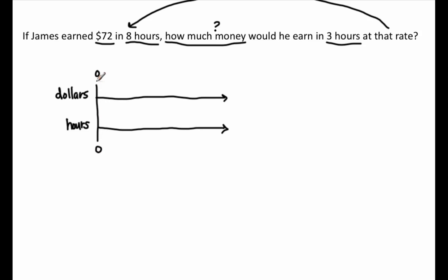This is the comparison that is taking place. We're going to read the problem and place the numbers where the units belong. James earned $72, so $72 goes on the dollars number line. In eight hours, so eight goes on the hours number line — $72 matches with eight hours. How much money would he earn in three hours? We don't know how many dollars, so we put a question mark, and three hours goes on the hours number line.